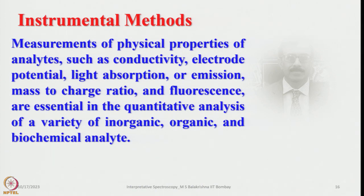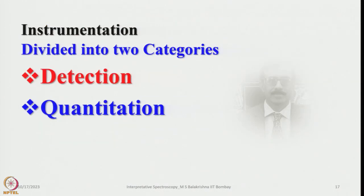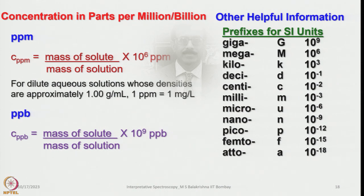Instrumental methods involve measuring physical properties of analytes such as conductivity, electrode potential, light absorption or emission, mass-to-charge ratio, and fluorescence — essential in the quantitative analysis of organic, inorganic, organometallic, and biochemical analytes. Instrumentation is divided into two categories: detection and quantitation. One should be familiar with common units: ppm (parts per million) and ppb (parts per billion), as well as SI prefixes such as giga (10⁹), mega, kilo, deci, centi, milli, micro, nano, pico, femto, and atto (10⁻¹⁸).